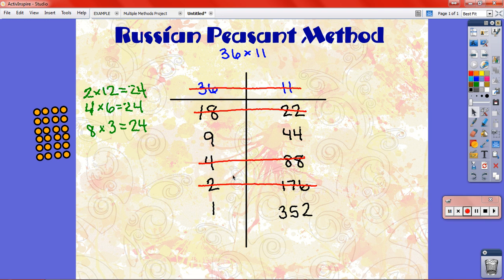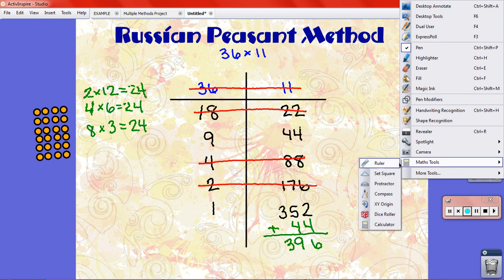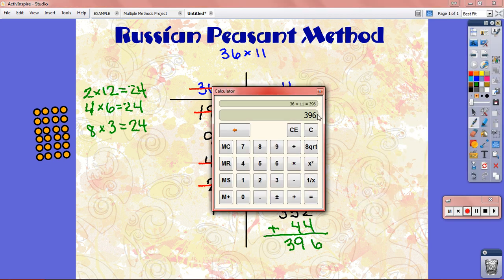But this is 8 times 44. This is the same as 8 times 44. And this is the same as 8 times 44. So all we're missing is that 1 44 we lost up here. So what we do is we add them together. 352 plus 44 is 396. And I'm just going to pull up my calculator so you can see that that is a true answer. 36 times 11, 396. 396, same thing we got with our Russian peasant method.